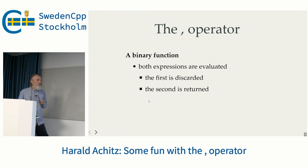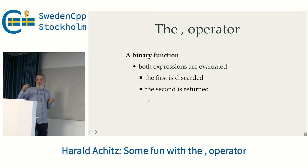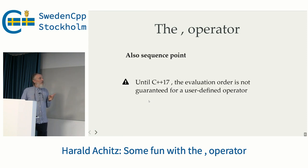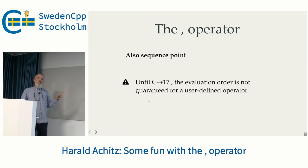It's a binary operator, takes two arguments, and both expressions are evaluated. The first is discarded and the second is returned — we will see in a moment what this means. Just a notice: it is a sequence point for built-in operators, just for built-in operators until C++17. Since C++17 it is also defined for user-defined operators, so the order is guaranteed. Before C++17 the order was not guaranteed — you could have the same undefined behavior as I showed before. But now with C++17 everything is fine.